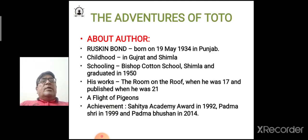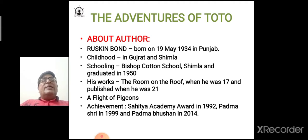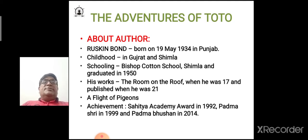Ruskin Bond was born on 19 May 1934 in Punjab. He spent his childhood in Gujarat and Shimla. He did his schooling at Bishop Cotton School, Shimla, and graduated in 1950. His famous works are 'The Room on the Roof', written when he was 17 and published when he was 21, and 'A Flight of Pigeons'. His achievements include the Sahitya Akademi Award in 1992, Padma Shri in 1999, and Padma Bhushan in 2014.